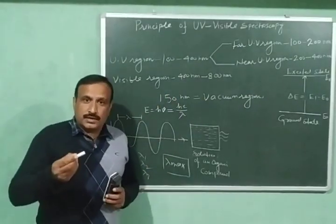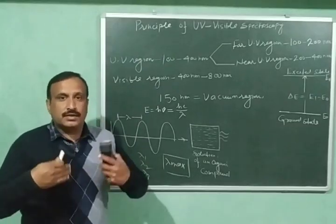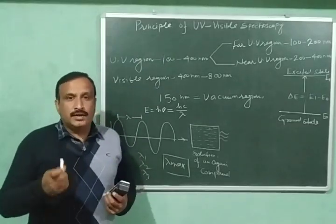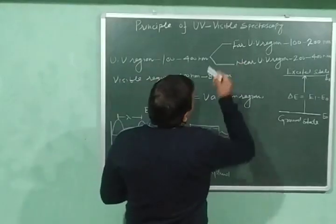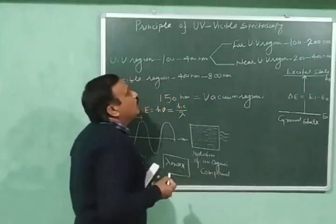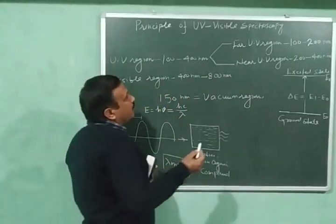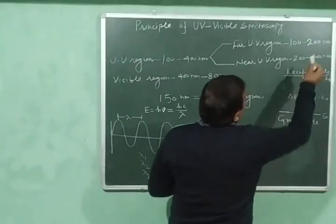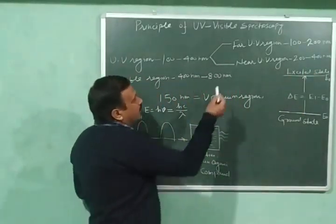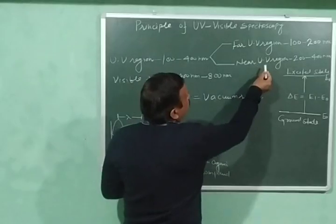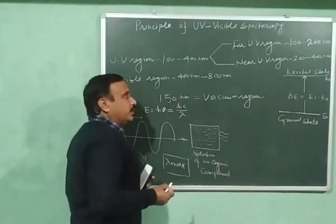The ultraviolet region has further been divided into two separate regions. The first region is called the far ultraviolet region and it extends from 100 to 200nm, whereas the second is the near UV region and it extends from 200 to 400nm.